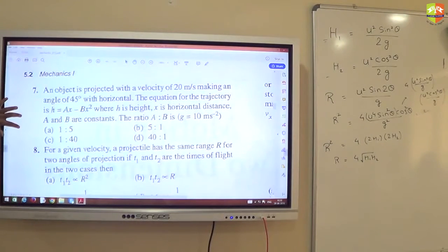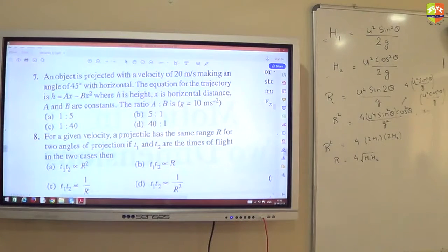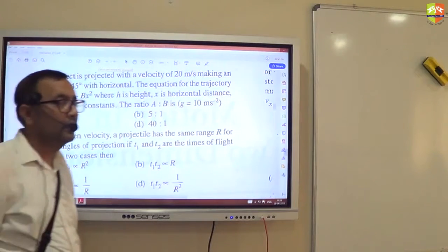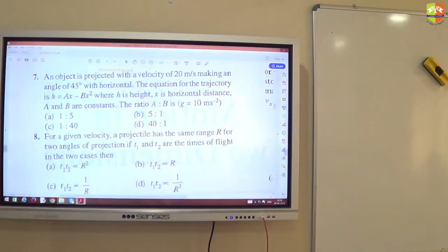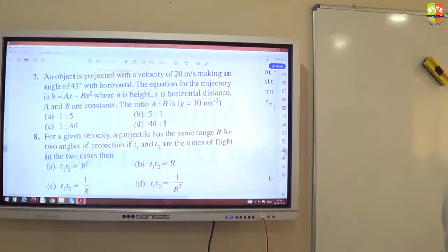You have these two questions. You have 5 minutes to solve both of them. How many people got the 7th question, the first one? D. D for donkey. 40 is to 1. How many people got the next one also? I will solve the 7th question.